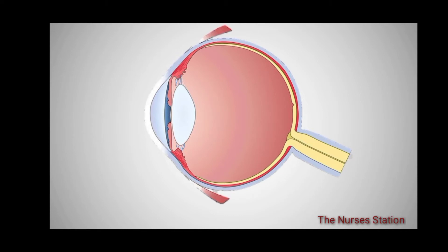Looking at the basic structure of the eye, most of the eye is covered by a covering called the sclera, which is a white colored, tough covering providing the eye its shape. Inner to it is the choroid, which is a vascular layer providing nourishment to the retina. The retina is the innermost layer on which the light is focused and on which the image is formed.